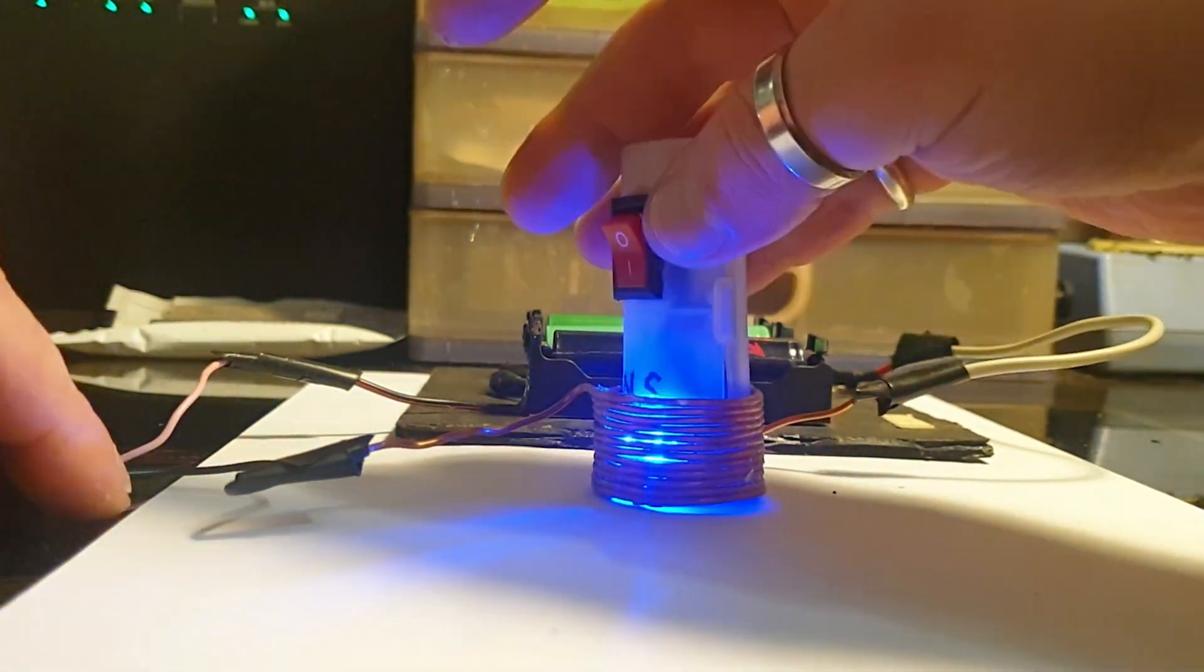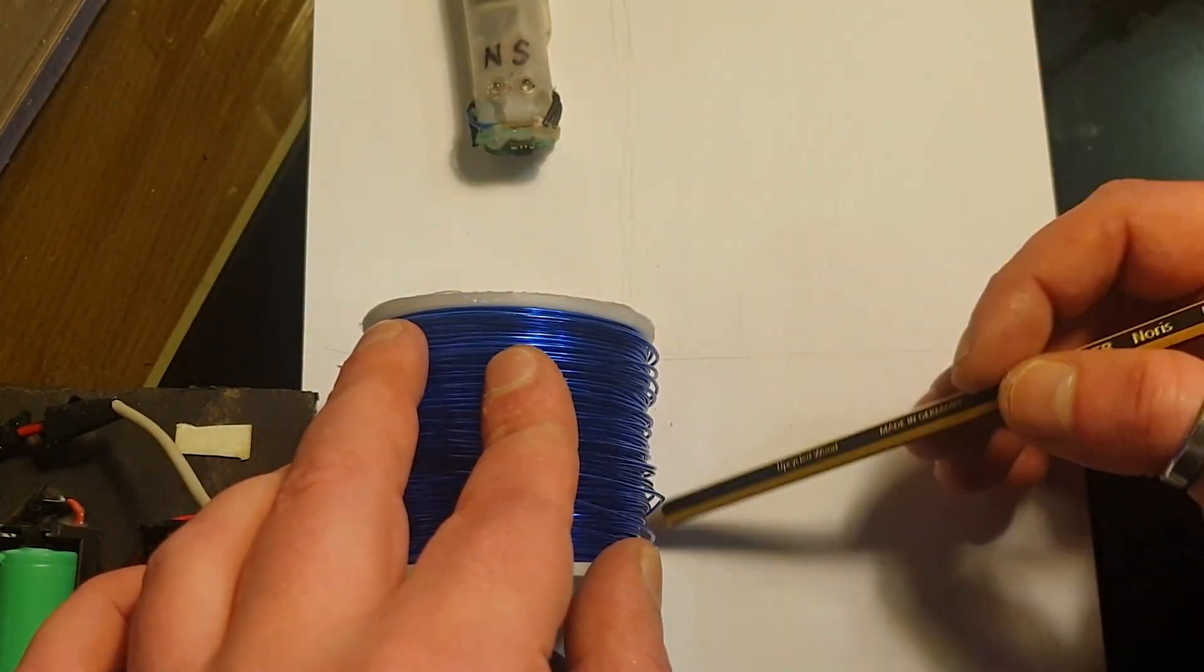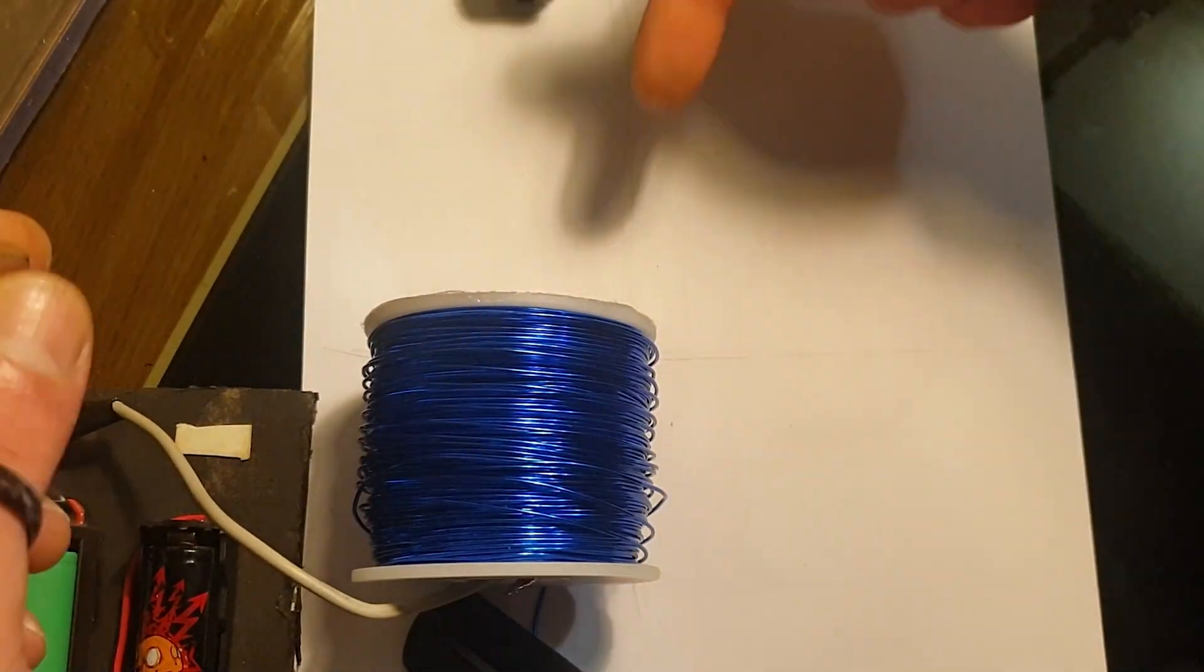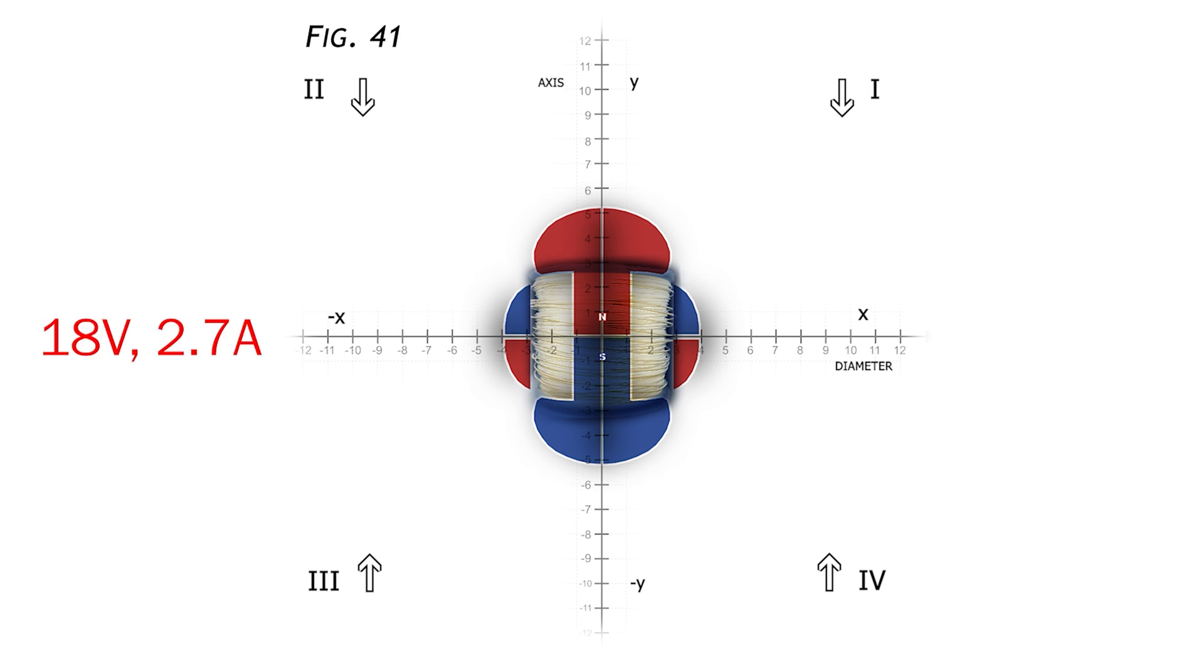But with electromagnets, we need to consider some extra details. For example, here's a winding made with 1mm enameled aluminum wire. In the first test, it's powered at 12 volts, 1 amp. In the second, 18 volts, 2.7 amps. In the third, 24 volts, 4.5 amps.